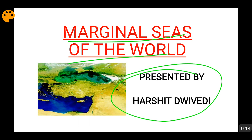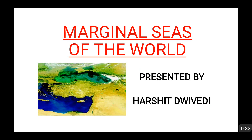Marginal seas are those seas which are actually not very open in their orientation — their geological orientation. They are not like an open ocean or an open sea. They are actually enclosed. Now, how are they enclosed, and what are the examples of marginal seas of the world? This we are going to see in this video.